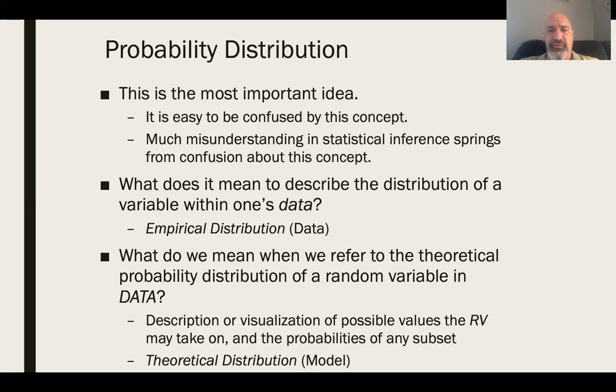How do we talk about the distribution of all data that could ever be generated according to the process we're studying? And so we can do this with a description or visualization again, but now instead of the actual data we're observing, we're talking about all possible values that the random variable in question may take on and the probabilities of any subset.